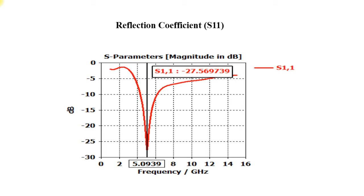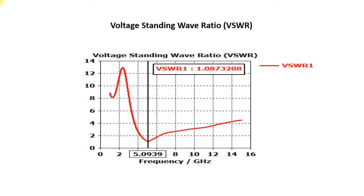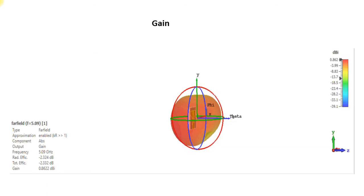We have a return loss of around minus 27.56 dB, which is very good — that is your Y axis. Talking about the Voltage Standing Wave Ratio, the ideal value should be less than or equal to 2. For the corresponding resonant frequency of 5.09 GHz, we are getting a VSWR value of 1.08, which is almost equal to 1, satisfying the ideal condition and indicating this is a very good antenna. The gain at 5.09 GHz is around 0.8622, which is positive but a smaller value, since most of the ground is removed and it cannot reflect the signal back — due to the defective ground structure, the gain is less.